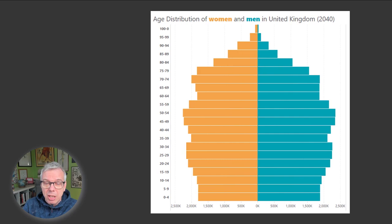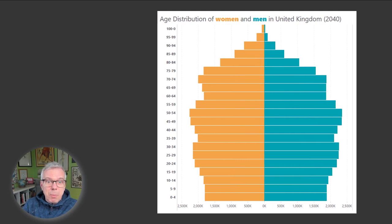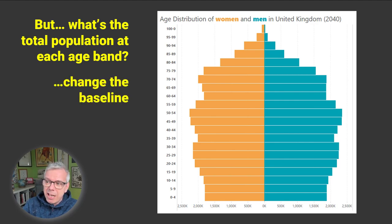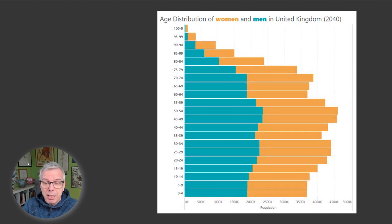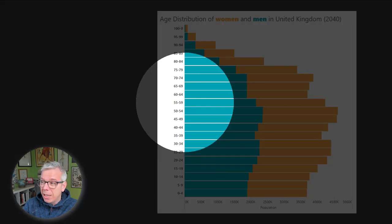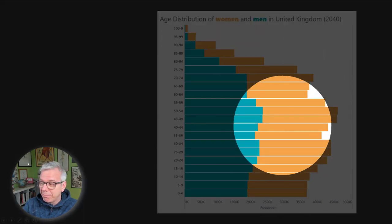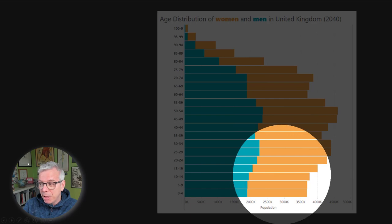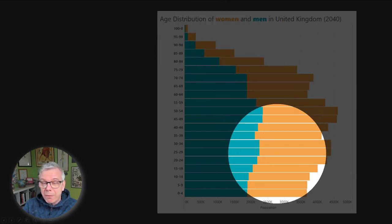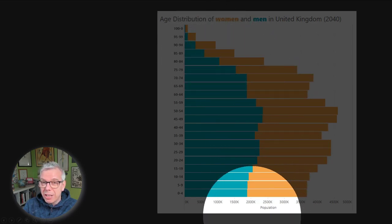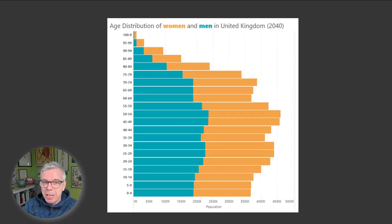It's a terrible chart if you want to know whether there are more women than men at any given age band, because of the baseline. It's also a terrible chart if your question is: what is the total population at each age band? I can't tell you because the baseline doesn't let me do that. To answer that question, you could change the baseline — have something like this. Now I can see total population at each age band. But just like the truck change, my females don't have a common baseline, and so I can't actually see their total values.